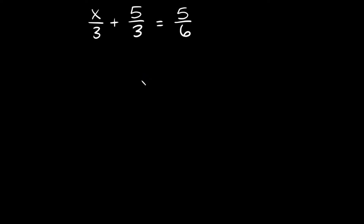What's up, you freaking geniuses? So in this video I'm going to teach you how to solve a linear equation that's made up of fractions. As you can see, we have a problem right here: x over 3 plus 5 over 3 is equal to 5 sixths. So how do you solve for x right here?